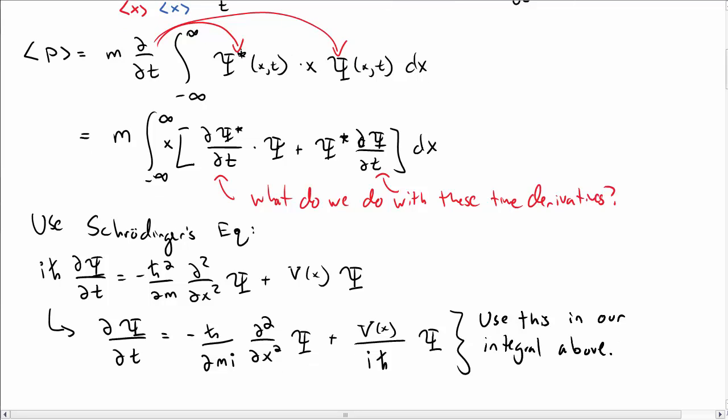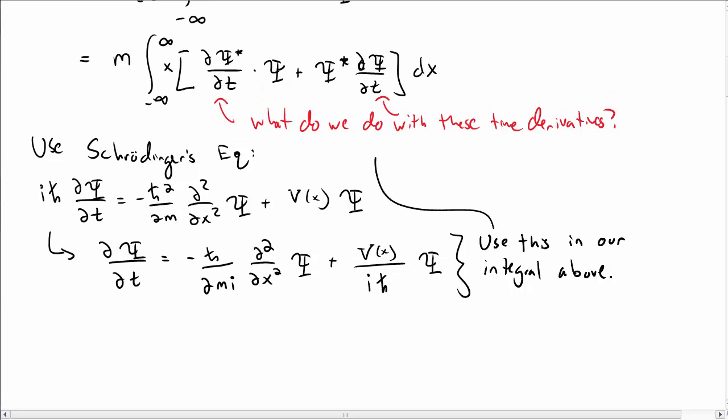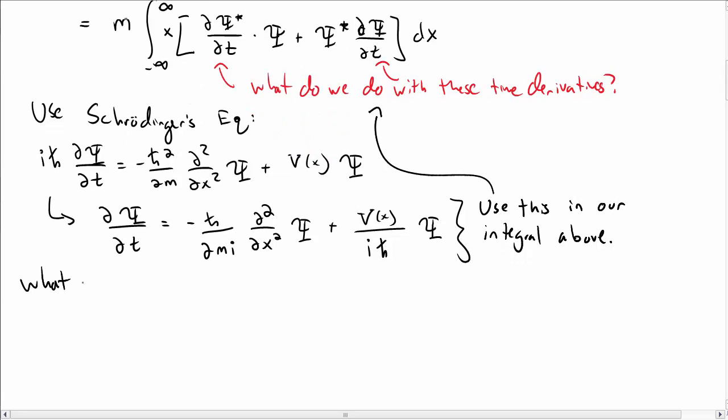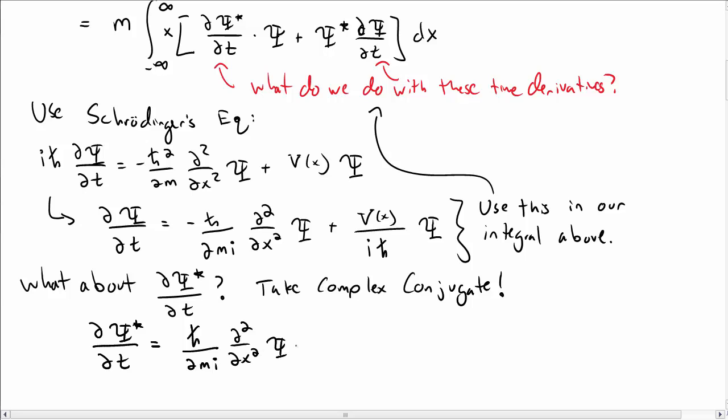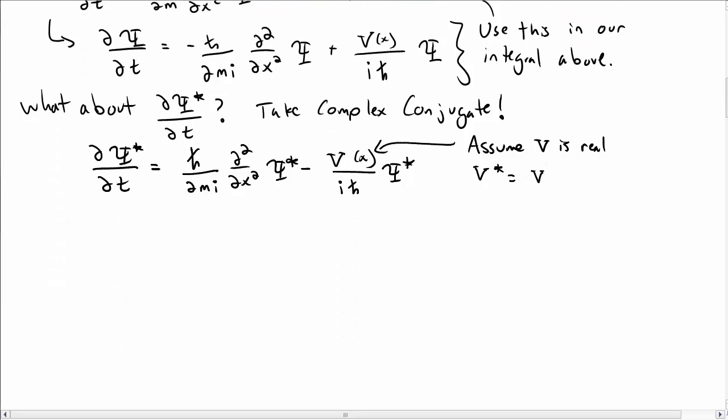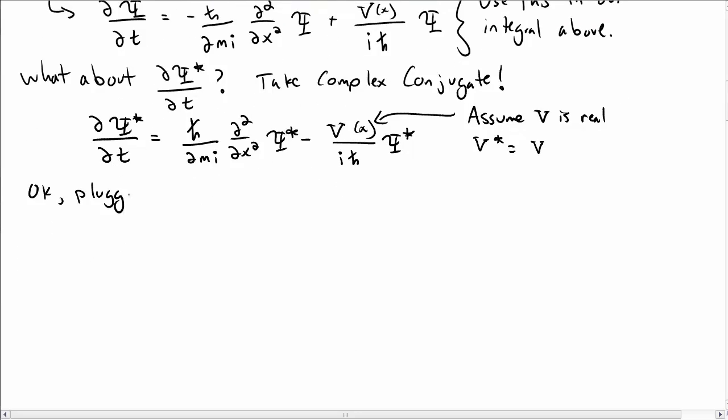We're going to use this to replace our d psi dt in the integral above. Of course, we also have d psi star dt. What are we going to do about that? We could just take the complex conjugate of the expression that we just wrote. Taking the complex conjugate on both sides, everywhere we see an i we write minus i, and everywhere we see a psi we write psi star. We did assume here that the potential v is actually real, so that v star is equal to v.